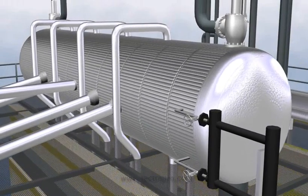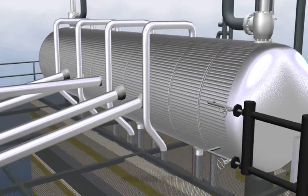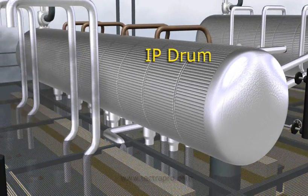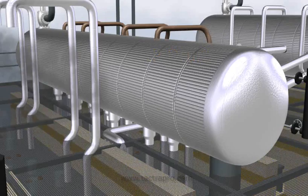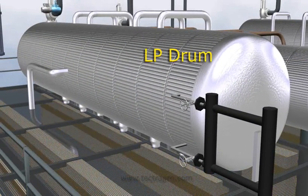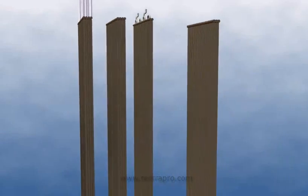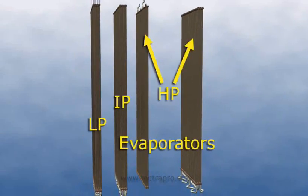Three steam drums which are high pressure, intermediate pressure, and low pressure take the steam water mixture coming from their respective evaporator sections.